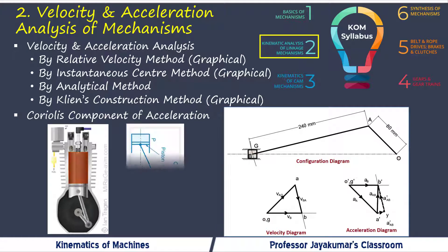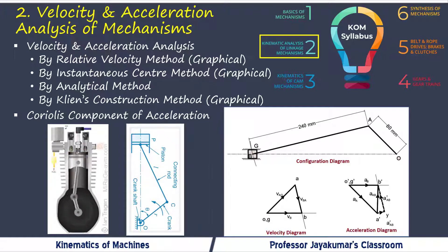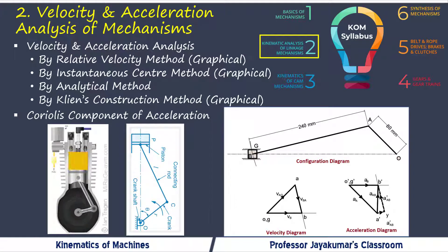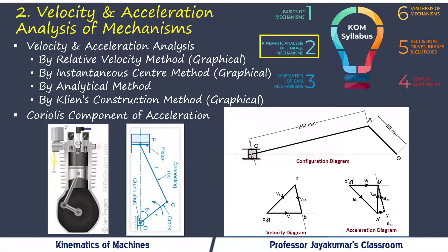In the second module, for any given mechanism we will be determining velocity and acceleration of various links. As you can see, we have an IC engine which uses a slider-crank mechanism. On the right-hand side we have the velocity diagram and acceleration diagram, by which we can find the kinematic variables of various links of the given mechanism. Various methods used include the relative velocity method, relative acceleration method, instantaneous center method, Klein's construction method, and analytical methods. For special cases, the Coriolis component of acceleration will also be determined.